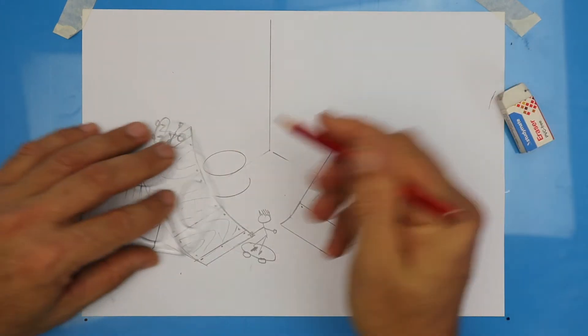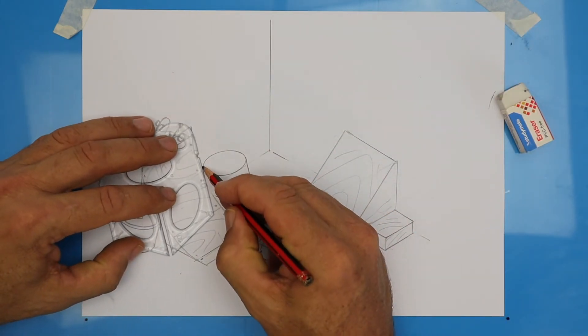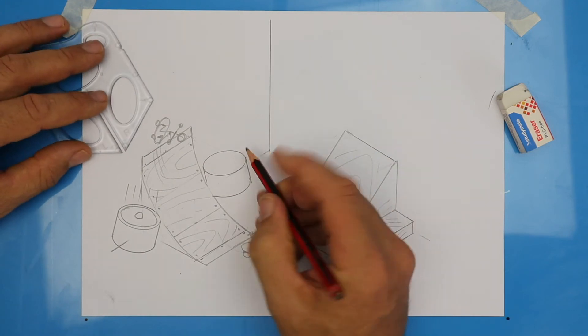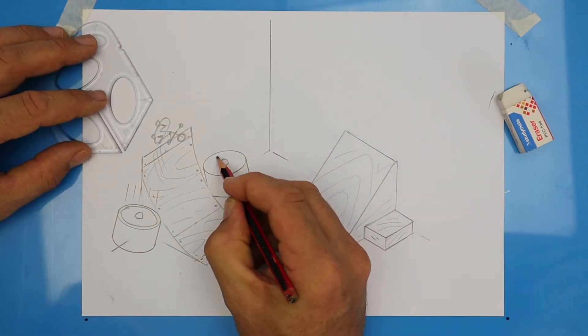Alright, so a little bit of overlap there behind the ramp. There's the middle of the propeller, or the blade. Make it look hollow.